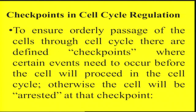Beyond cyclin-CDK combinations, within a cell there is a higher level of regulation via cell cycle checkpoints. There are three kinds of checkpoints where it is ensured that whatever is required for the next stage is being synthesized appropriately. If it is not done, the cell will arrest at that particular stage itself.